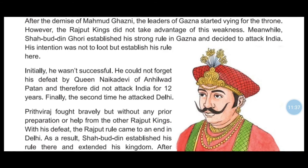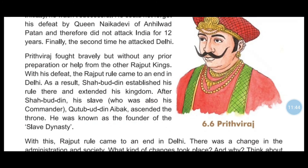Shahabuddin Ghori's initiative was not to loot but to establish his rule in India. Initially he was not successful — he could not forget his defeat at the hands of Queen Naik Devi of Anhilwad Patan — and therefore did not attack India for 12 years. Finally, in the second battle, Prithviraj fought bravely but without any preparation or help from the other Rajput kings. With his defeat, the Rajput rule came to an end in Delhi. As a result, Shahabuddin established his rule there and extended his kingdom.